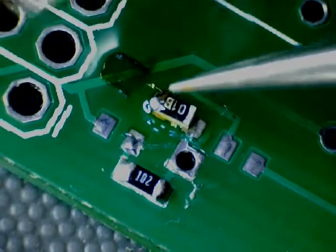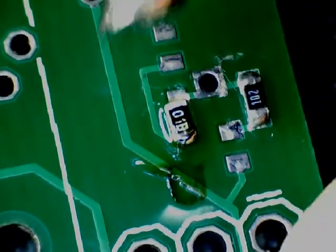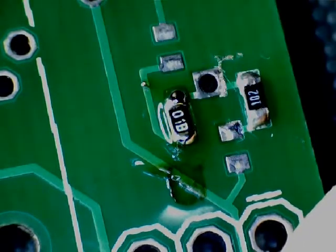If a resistor is soldered a little crooked you can reflow it by melting the solder at both ends with the face of the tip. Surface tension then pulls it into place.